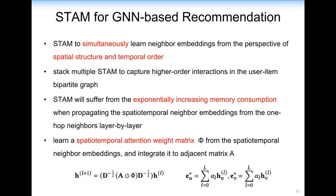To capture high-order interactions in the user-item graph, we apply STM to propagate embeddings. However, STM suffers from expanding knowledge and increased memory consumption when propagating the spatial-temporal neighbor embeddings layer-by-layer. Thus, we learn a spatial-temporal attention-weight matrix from the spatial-temporal neighbor embeddings and integrate it into the adjacency matrix.